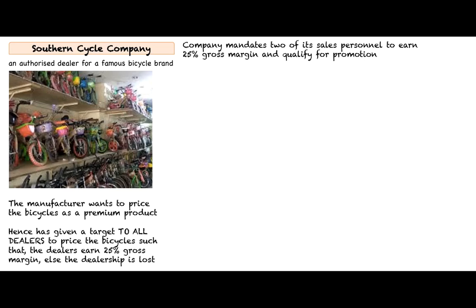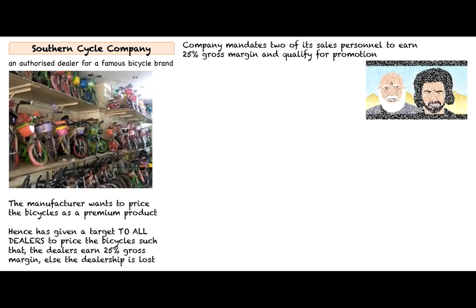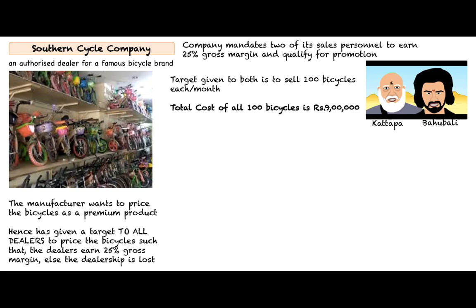Southern Cycle Company mandates two of its sales personnel to earn 25% gross margin to qualify for promotion — that's the carrot. The sales personnel are Kattapa and Bahubali. The target given to both is to sell 100 bicycles each per month.